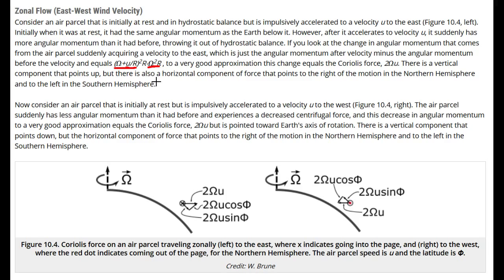The difference, to good approximation, is two omega times u, which is just the Coriolis force, and in the case of eastward motion, is pointed away from Earth's axis in the northern hemisphere.